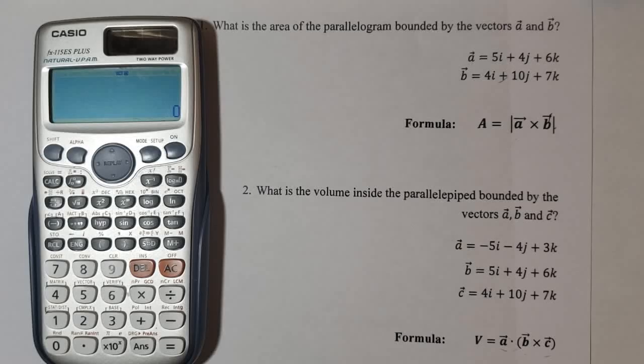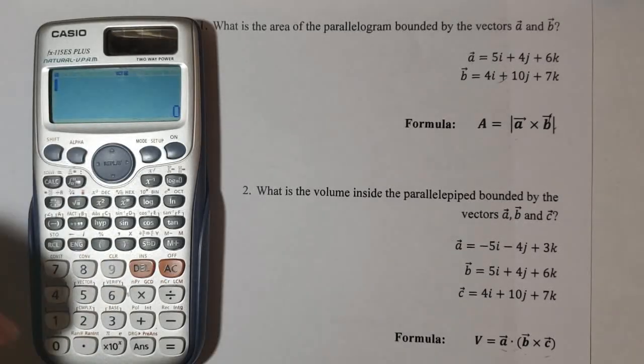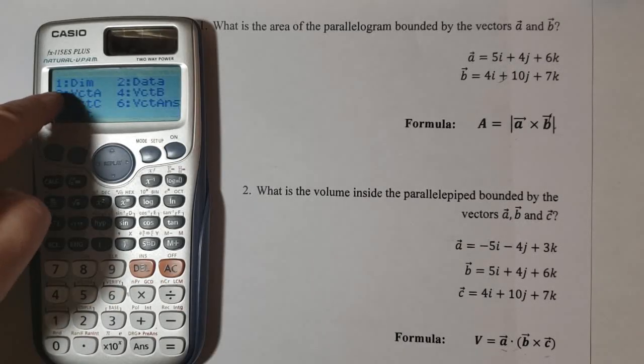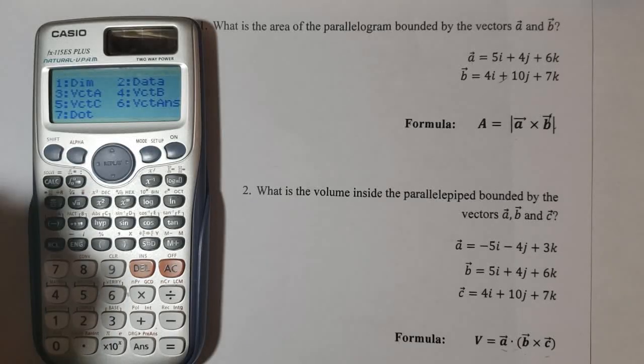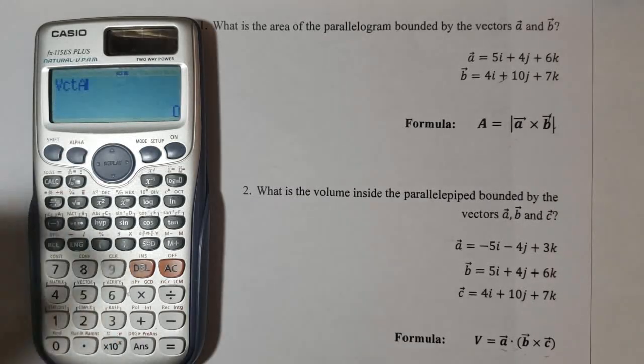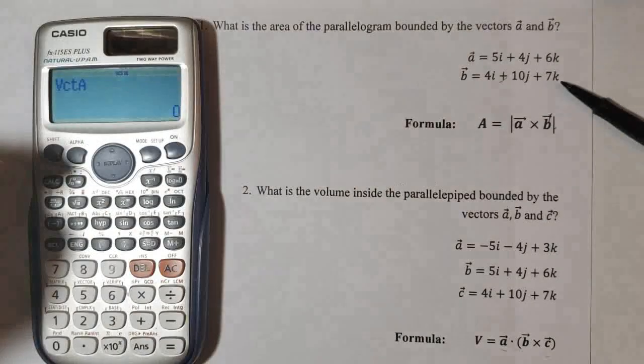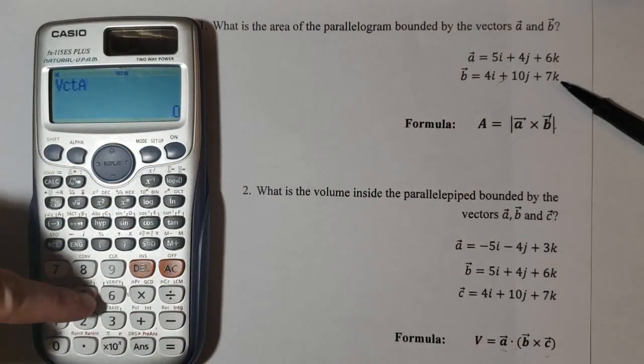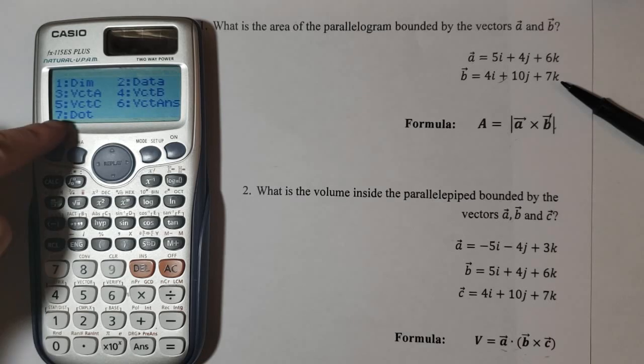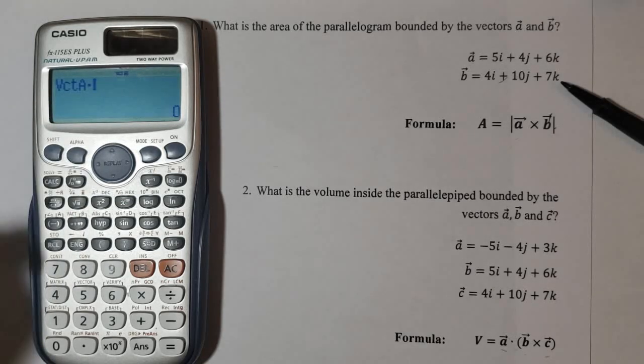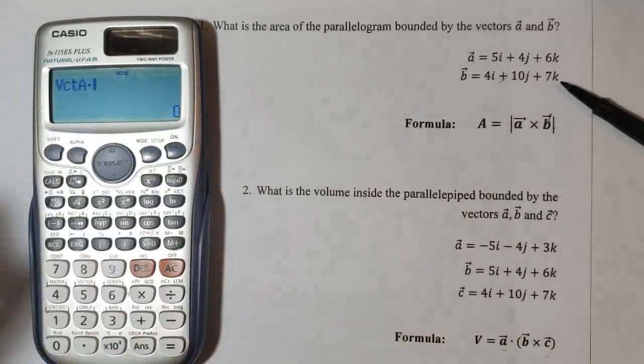Now we press the shift key here. Go to vector. And we will choose option 3 for vector a. So we are looking at our formula and we can see that we have the vector a and we dot with the cross product of the vector b and c. So we have vector a. We go to shift again. 5 for vector. And we see option 7 is for dot. So we choose option 7. Open the parentheses as per the equation.